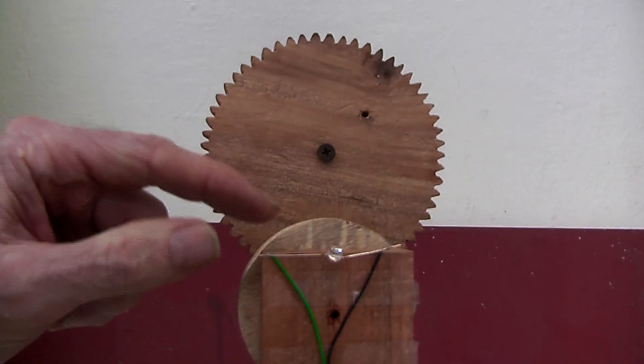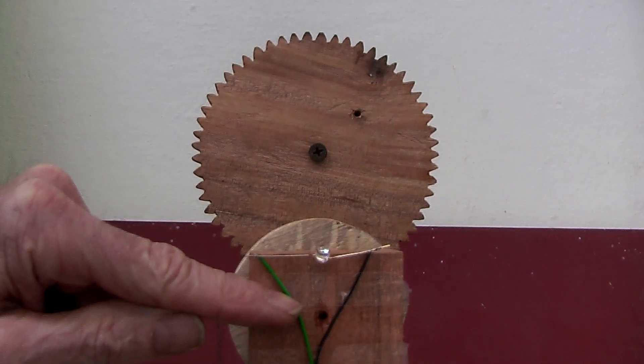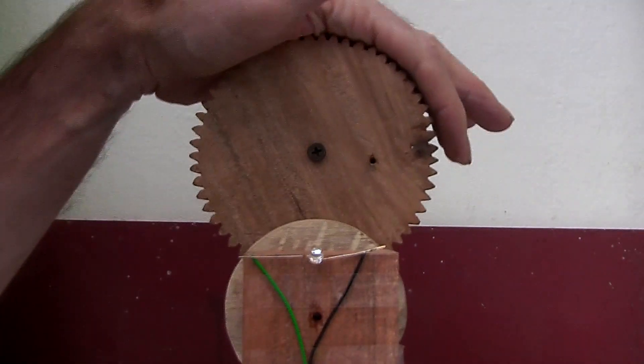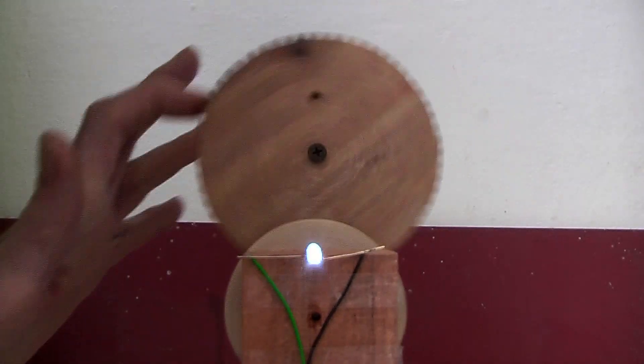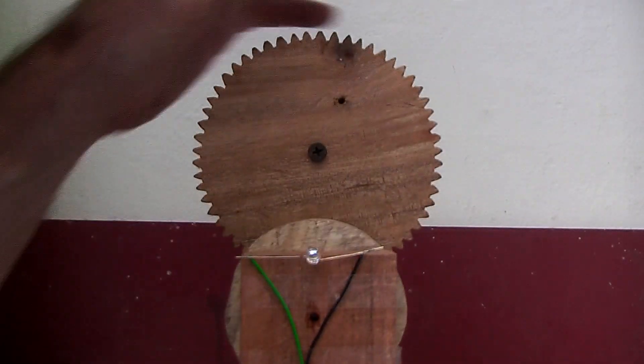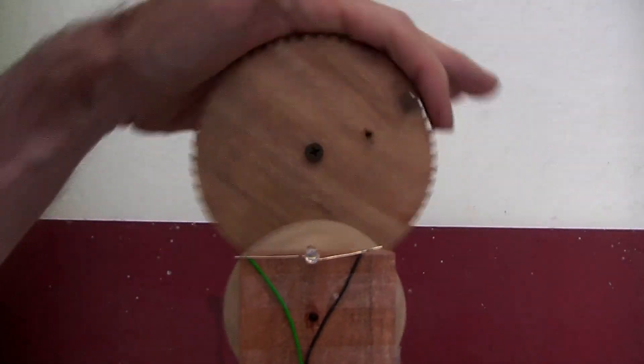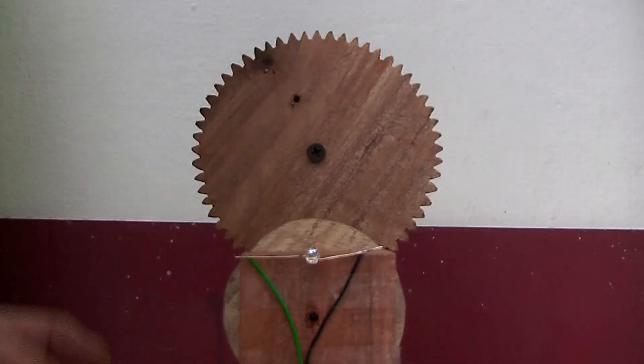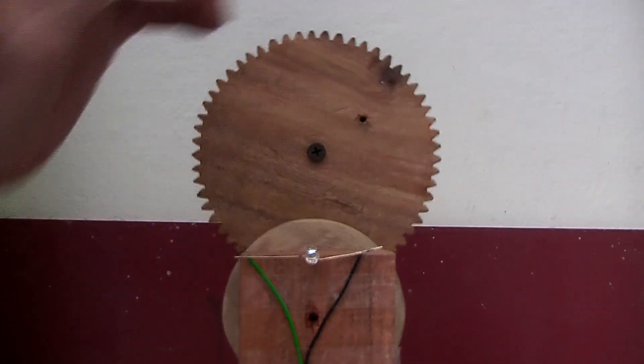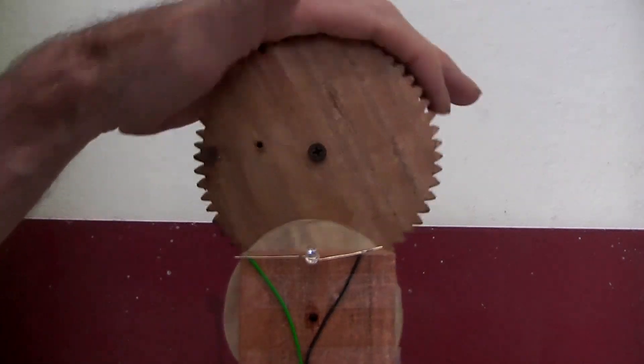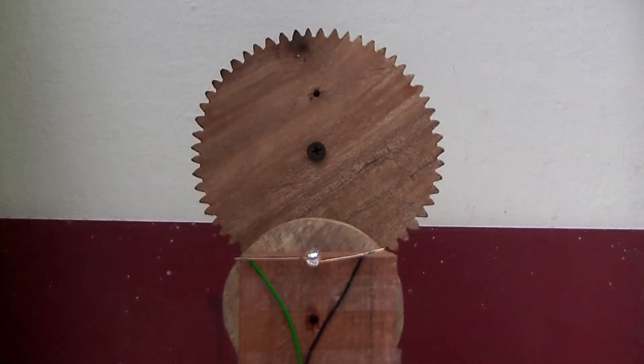So, there we have it, we have an LED connected to the wires and so if we give it a bit of a spin - yes, it produces a current, even though the machine is very crunchy. It is not a bad attempt for my first one.